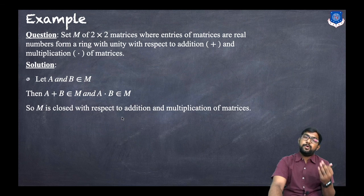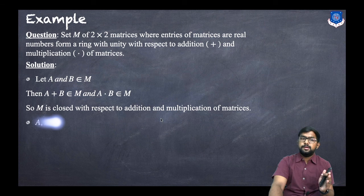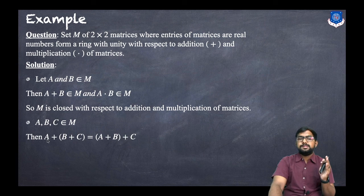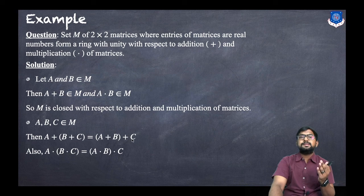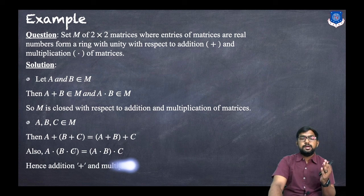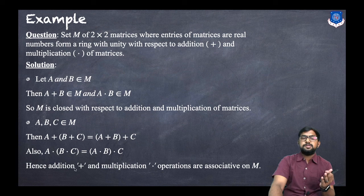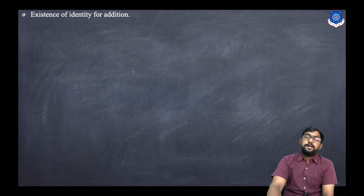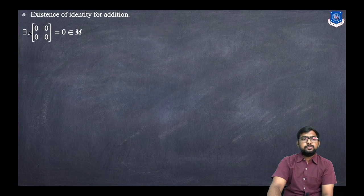So M is closed with respect to addition and multiplication of matrices. For A, B, C belonging to M, (A + B) + C = A + (B + C) — changing brackets does not change the answer. Similarly for multiplication. Hence addition and multiplication are associative on M.